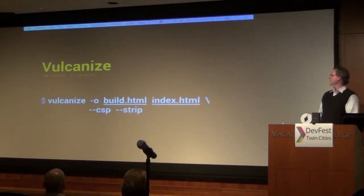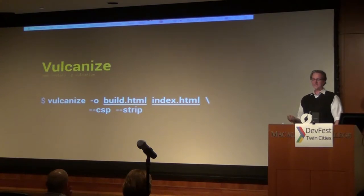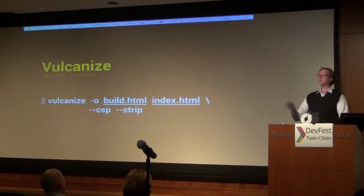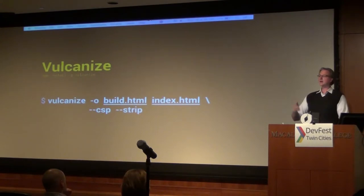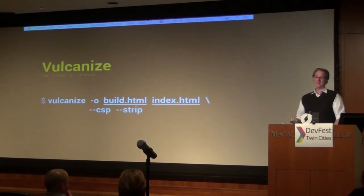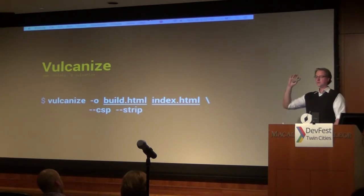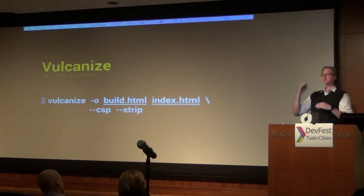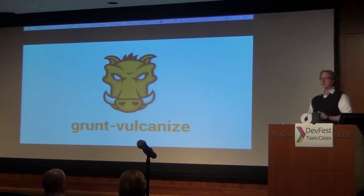There's a tool called Vulcanize. By running it from the command line on one of your files, it looks through your HTML file and checks for any imports that are called. On a desktop with a fast connection you don't care if the New York Times makes 320 unique web calls. But on a mobile device, each HTTP request is expensive. This Vulcanize command will look through all of your files and flatten them into one file, or even inline them all into a single file, reducing the HTTP requests.